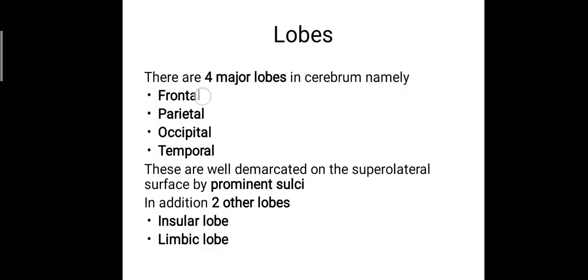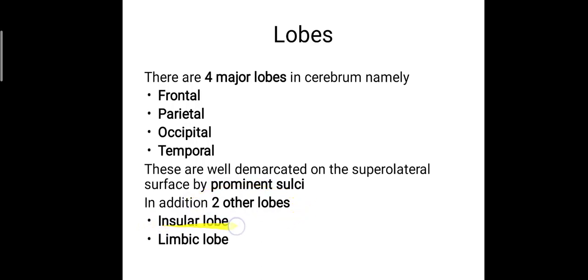There are four major lobes in the cerebrum, namely the frontal lobe, parietal lobe, occipital lobe, and the temporal lobe. These lobes are well demarcated on the superolateral surface of the cerebrum by the prominent sulci. In addition to the four lobes, there are two other lobes which are the insular lobe and the limbic lobe.